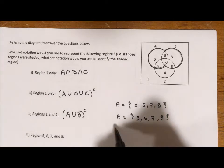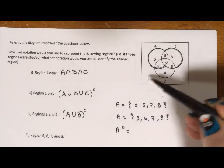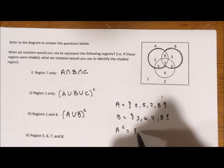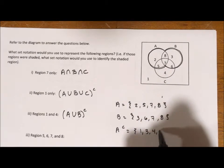If instead of doing the union of those putting all those numbers together and then the complement, if instead we looked at the complement of A. So the complement of A is going to be 1, 3, 4, and 6.